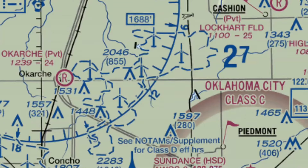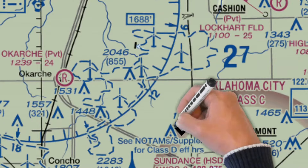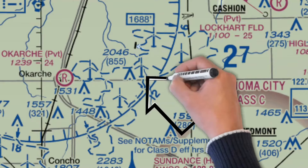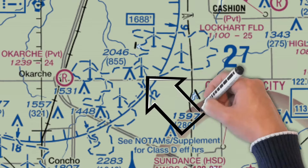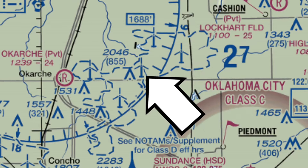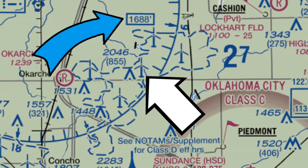Now check this out — as I'm sure you're already aware, this is a windmill farm. Notice the individual altitudes of these windmills aren't shown here. Instead, they give you the elevation of the tallest windmill in mean sea level right here.